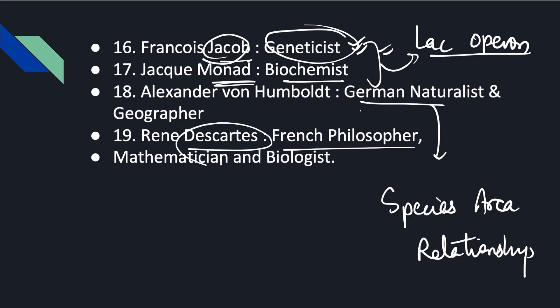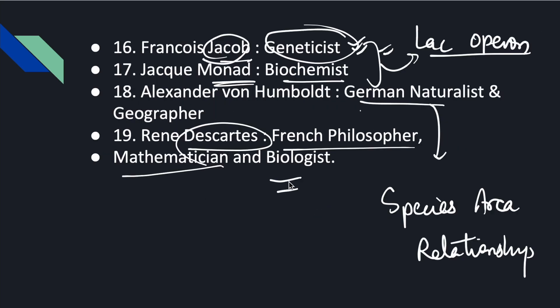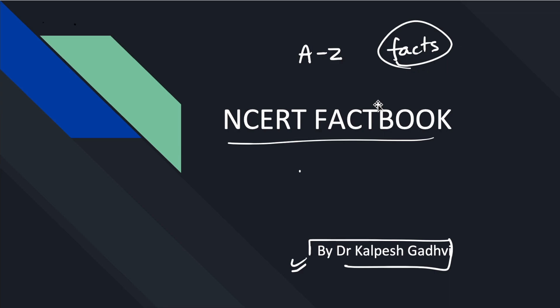French philosopher Descartes was also a mathematician and biologist. These are some of the scientists you come across in NCRT. I know this is quite boring to remember, but this is concise information about all the scientists covered in NCRT — scientists and their related fields. It has just taken a few minutes to go through these names. I will make separate small videos about sizes and other topics. I am Dr. Kalpesh Gadvi — I hope you enjoyed this video. Take care, bye. Jai Hind, Jai Bharat.